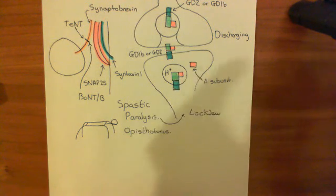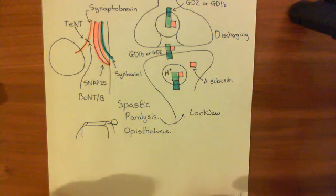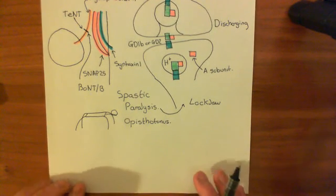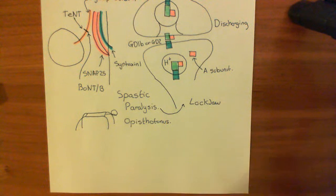So it's spastic paralysis. Now, what causes you to die? Well, if this happens to the phrenic nerve, which it will do, then the diaphragm is going to just contract and remain contracted. It's not going to relax.